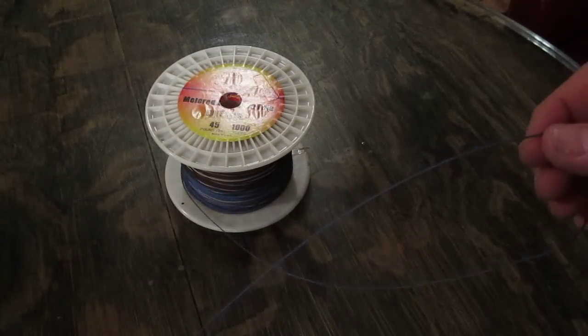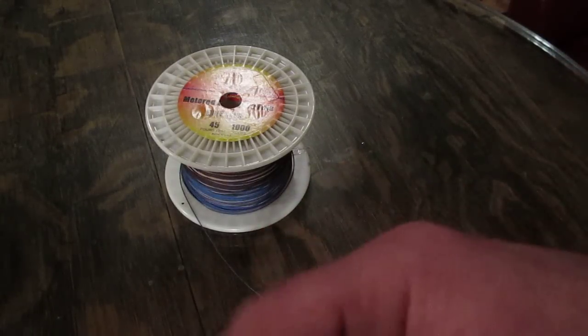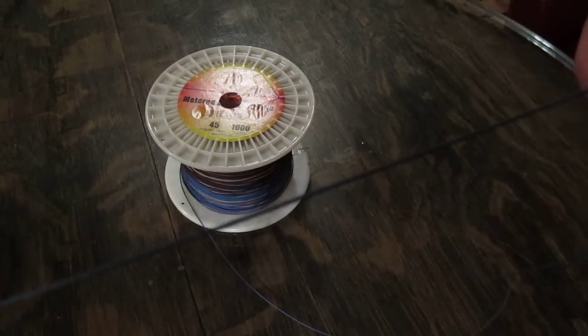This line is used for tube and worm. You can use bunker spoons, you control divers with it, or umbrella rigs.